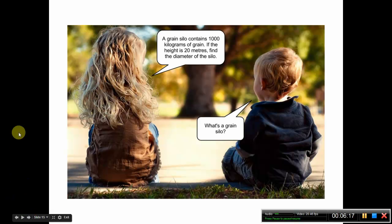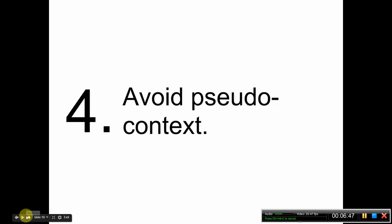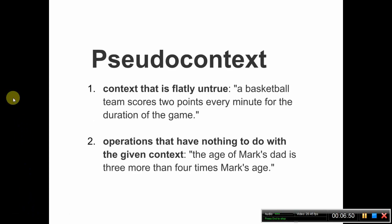I recommend using familiar contexts. As a little joke: a grain silo contains 1,000 kilograms of grain — students really cannot answer that question unless they know what a grain silo is, because they don't even know what shape it is. Sometimes a picture is drawn to make it easier to understand. Well, why not choose a context in the first place where the picture is unnecessary, where the picture is already in the kids' heads? Also avoid pseudocontext — that's when the context simply does not make sense at all.